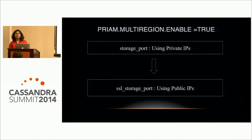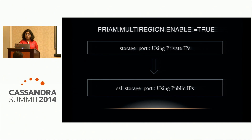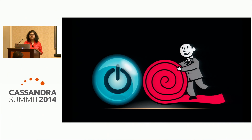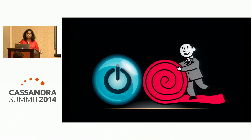Priam is an open-source Netflix sidecar that manages Cassandra — it can start and stop Cassandra, handle backups and restores, and provides additional functionality not in Cassandra out of the box. Then you do a rolling restart for the snitch changes to take effect. During the rolling restart the cluster is in mixed mode — some nodes use EC2 Snitch, some use EC2 multi-region snitch. To avoid confusion, both SSL and SSL storage ports need to be open, and both private and public IPs need to be exposed.